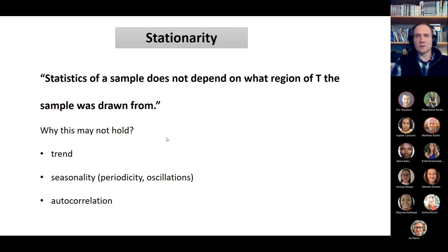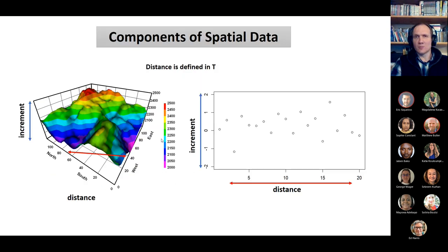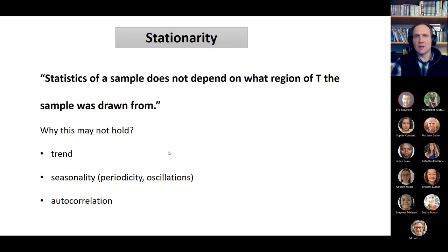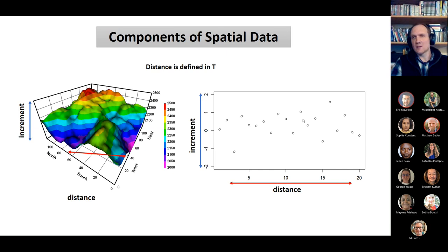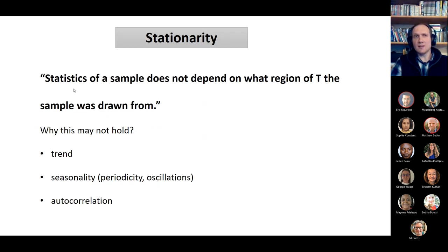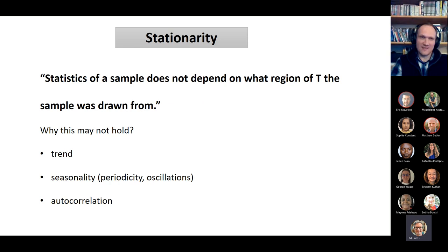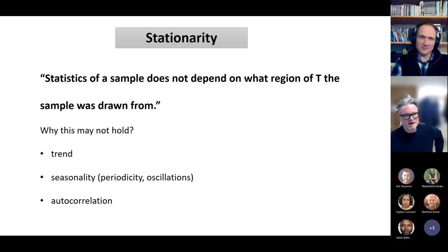The process is stationary if a sample taken from one region has the same properties as a sample taken from any other region. In other words, the statistics of a sample do not depend on which spatial region of T the sample was drawn from.